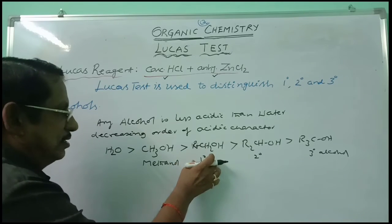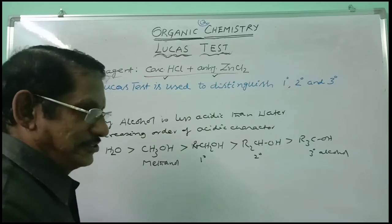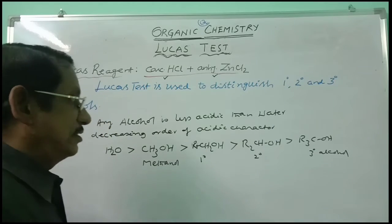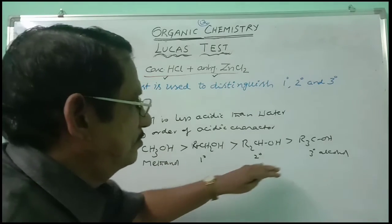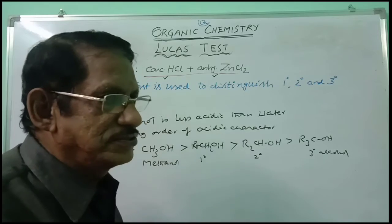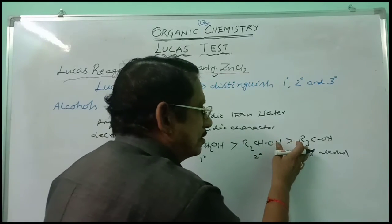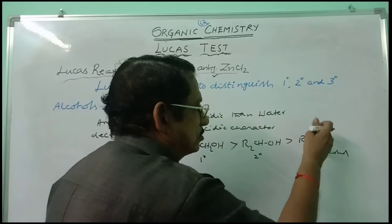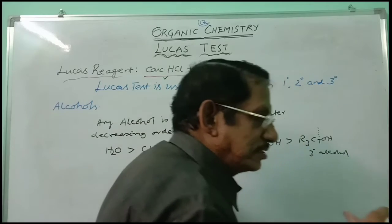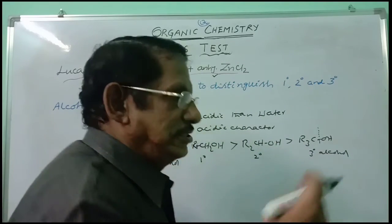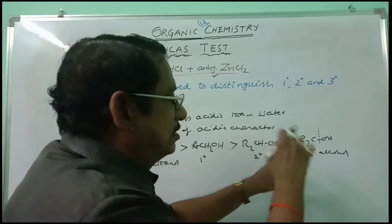That is why primary alcohol gives a reaction with sodium, giving sodium alkoxide, because it is more acidic — though less acidic than water, so the reaction is slow. But in the case of tertiary alcohol, it won't react as easily with sodium, because due to the three electron-donating alkyl groups and the inductive effect, the C–OH bond is strengthened. That is why it is less acidic and can be considered more basic.